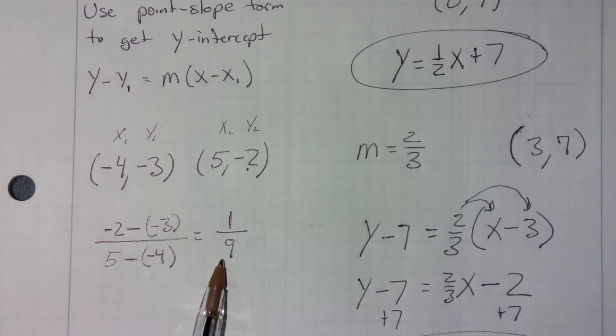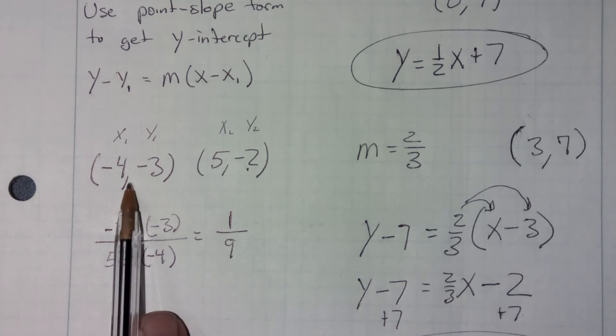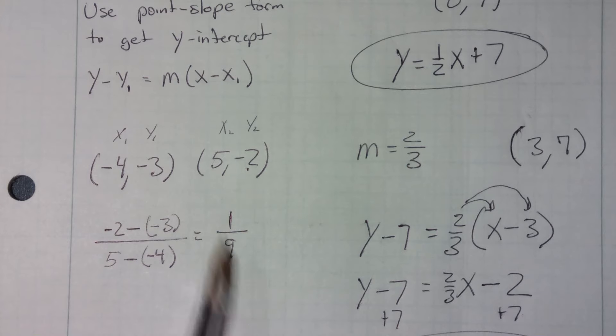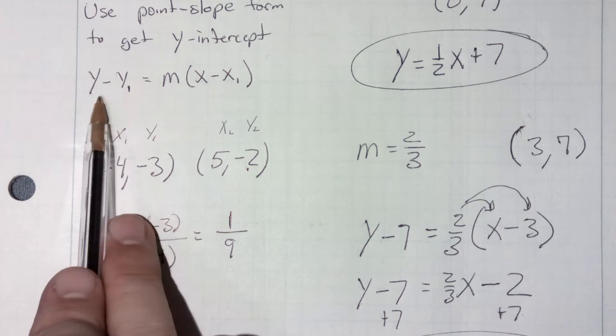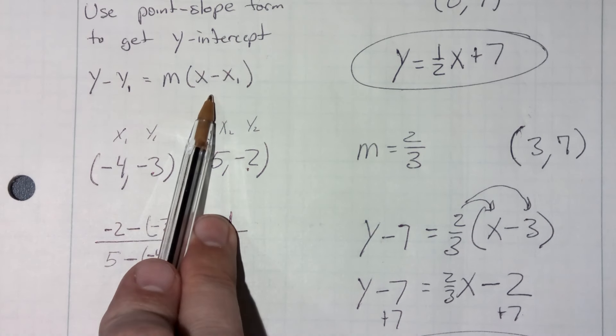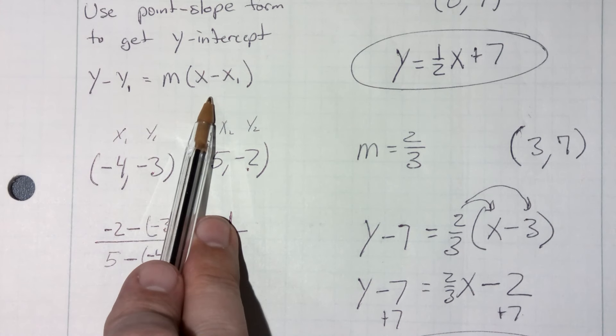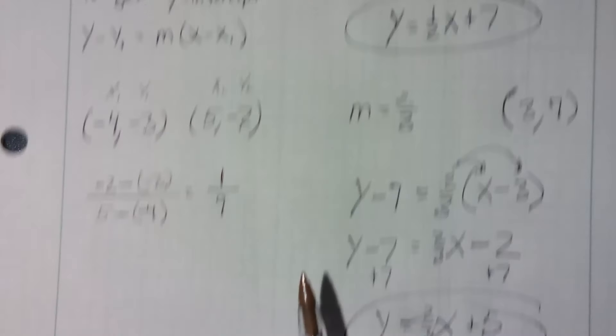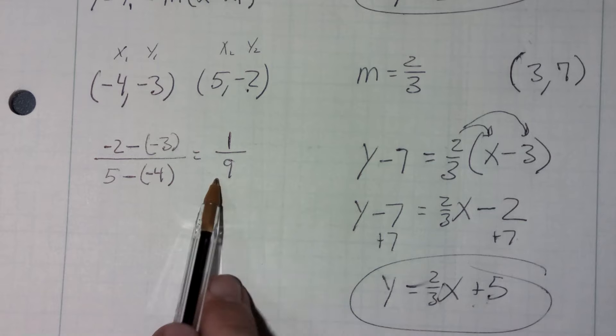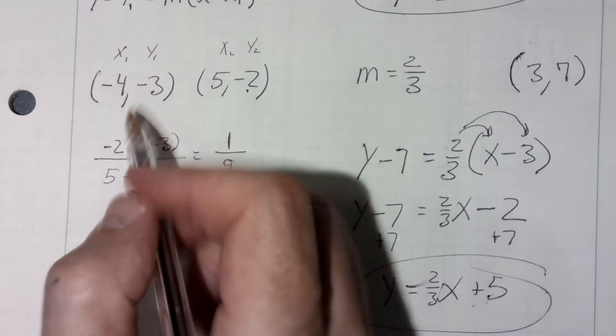Now that I have my slope, I'm going to use one of my two points and the slope in the point-slope form, and then convert it to slope-intercept form. So here we go. I'm going to use my slope of one ninth, and I'm just going to take this first point here.